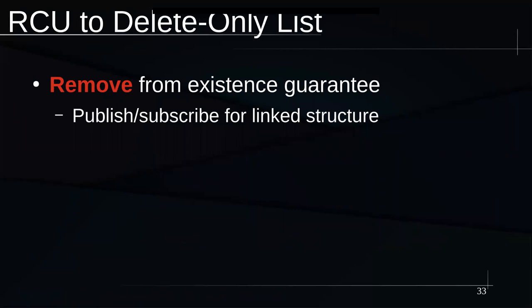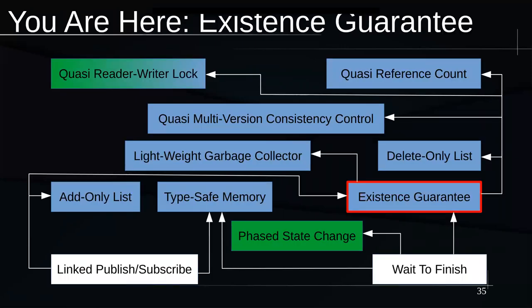The delete-only list is interesting in that we're taking the existence guarantee and removing something from it. We're no longer relying on the publish-subscribe piece, but we are relying on all the other things that make up the existence guarantee. The existence guarantee is actually less primal than the delete-only list.